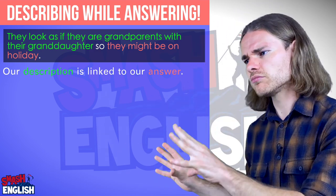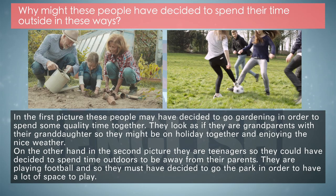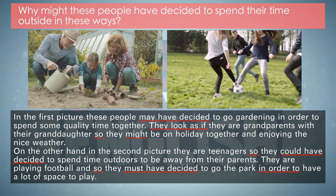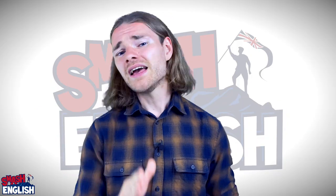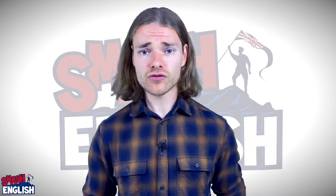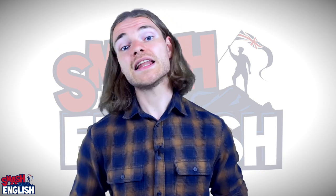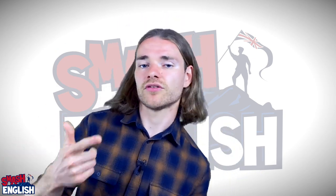This is why it's so important to start answering the question first — only describe in relation to your answering of the question. For example, 'they look as if they are grandparents with their granddaughter, so they might be on holiday.' Our description 'they look as if' is linked to our answer 'so they might be on holiday.' Your descriptions must be linked to your answer. So again: don't describe the picture, just answer the question. In this answer we have used complex grammatical forms — past modals of deduction and 'they look as if.' If you describe the pictures, you cannot use complex grammar; the only grammar you can really use to describe the picture is the present simple and the present continuous, which is A2 level for a B2 First exam.